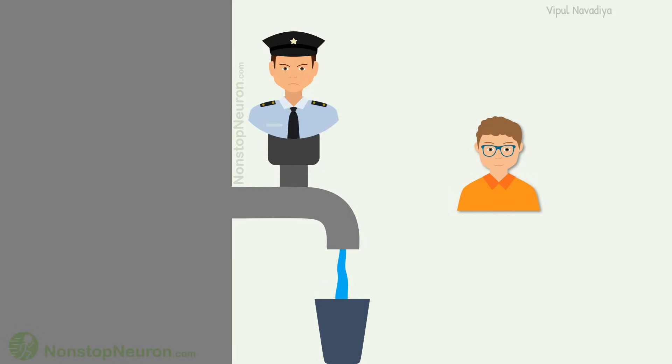A watchman of garden can come and lift the button to stop the flow. Here, the watchman is inverse agonist. He is doing opposite thing. Resting condition and agonist both are allowing water flow. But watchman is stopping the flow.